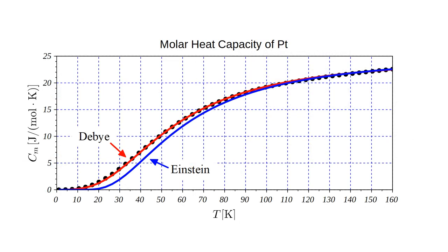Here are both the Debye and Einstein models compared to the observed heat capacity of platinum. They agree with each other and experiment at high temperatures, but only the Debye model accurately tracks the variation of heat capacity at low temperatures.